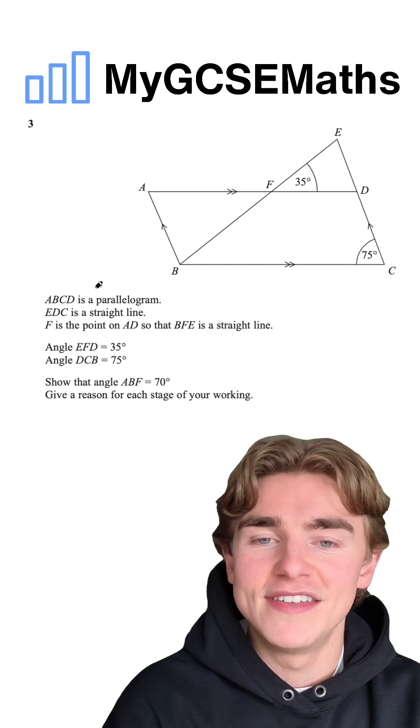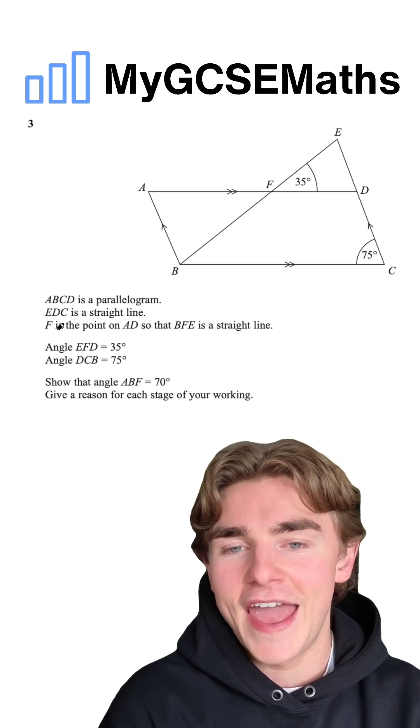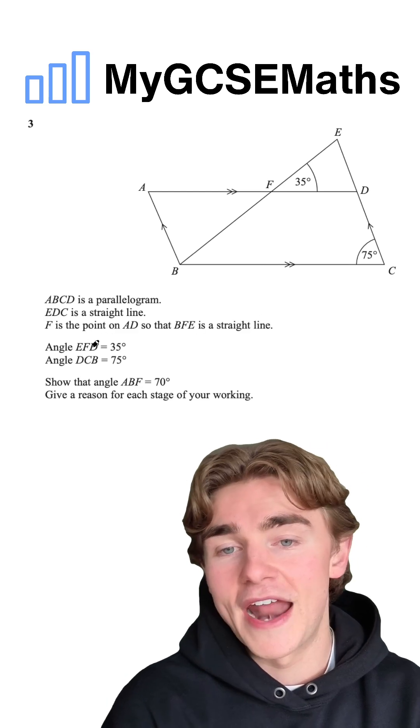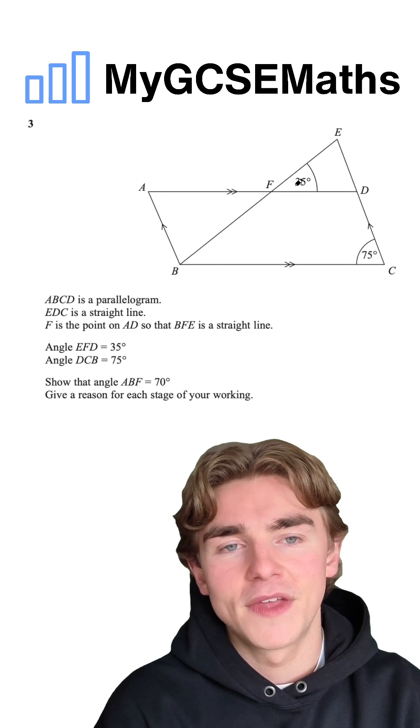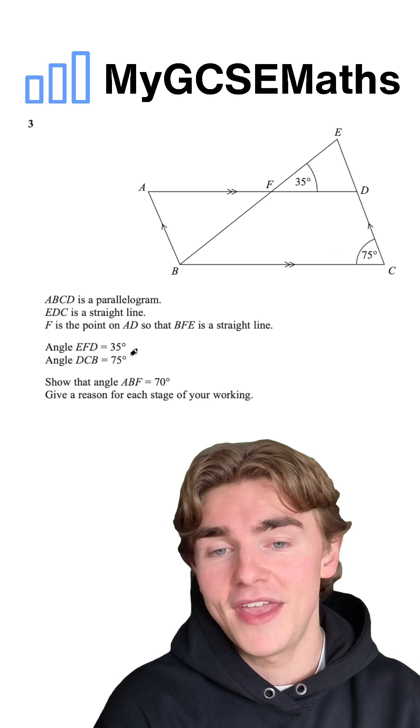The question says that ABCD is a parallelogram, EDC is a straight line, and F is the point on AD such that BFE is a straight line. We're told that angle EFD is 35, that's this one up here. Angle DCB is 75, this one down here.